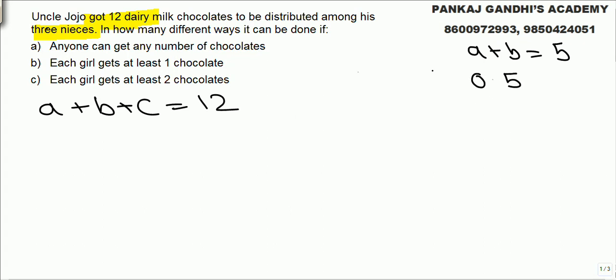So if first gets 0, second gets 5, first gets 1, 4, 2, 3, 3, 2, 4, 1, and 5, 0. How many different combinations we got, solutions we got, 6 solutions.